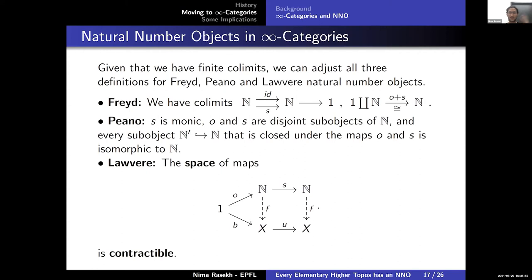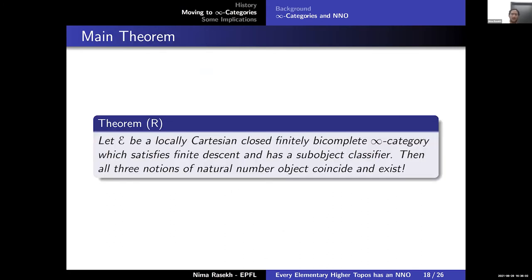We are now in a position to state the main result: if E is locally cartesian closed, finitely bicomplete, satisfies finite descent, and has a classifier, then all three notions of natural number object coincide and — crucially — exist. Unlike the classical setting, existence is provable from these axioms, not just an additional assumption.